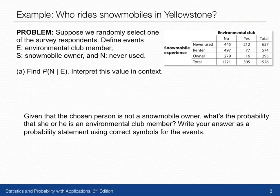Suppose we randomly select one of the survey respondents. Let's define event E as being an environmental club member, S as being a snowmobile owner, and N as having never used a snowmobile.